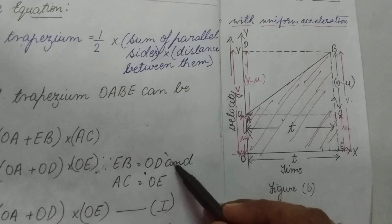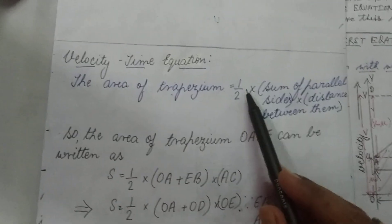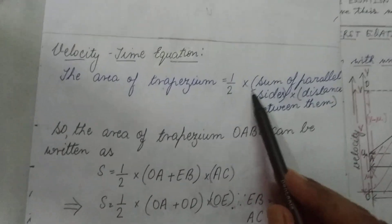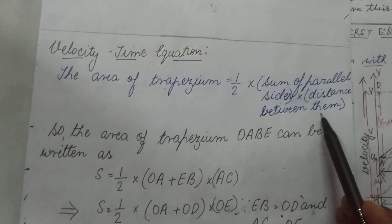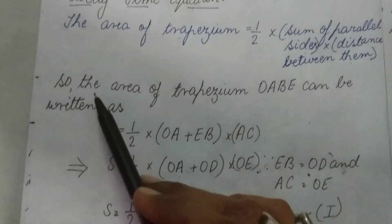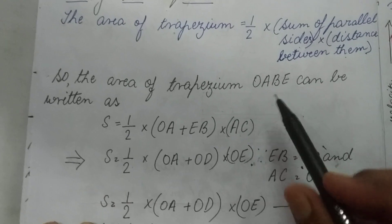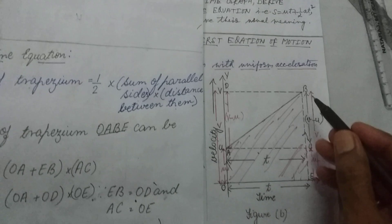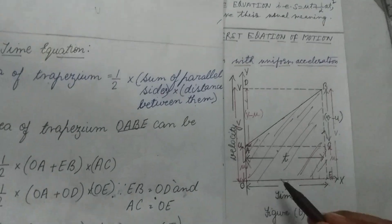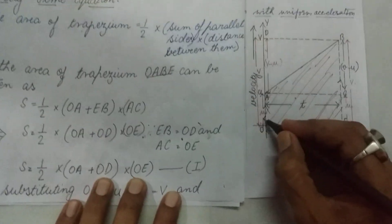Now I am going to explain using this. We know that the area of a trapezium is half into the sum of the parallel sides multiplied by the distance between the two parallel sides. The trapezium here is OABE, and we need to find the area between those two parallel sides.